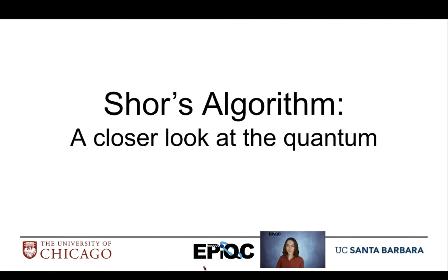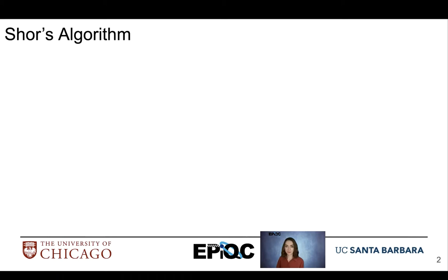Shor's algorithm. A closer look at the quantum. Shor's algorithm is a very exciting algorithm that's targeted for quantum computers. It's expected to offer an exponential speedup for factoring large numbers as compared to the best classical implementation, which involves a guess and check procedure or an exhaustive search for a factor of a large number.